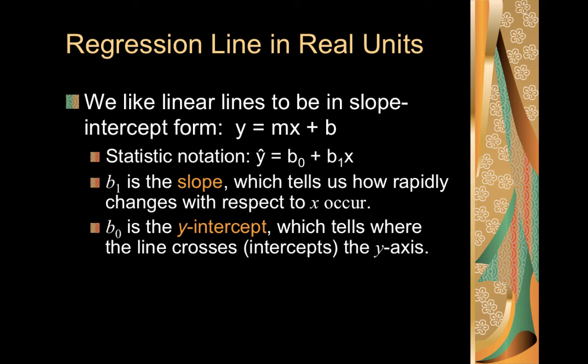We like linear lines to be in slope-intercept form, which until now we have known as y equals mx plus b, where m is our slope and b is our y-intercept. Unfortunately in statistics, we use a slightly different notation. We use ŷ for our predicted y value. b equals b₀, which is our y-intercept, plus b₁ times x. So b₁ would be our slope. b₁ is a slope, which tells us how rapidly changes with respect to x occur. And b₀ is our y-intercept, which tells us where the line crosses or intercepts the y-axis. b₀ is a starting point and is oftentimes going to be useless. It's just there to make the model fit our data.